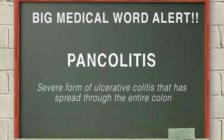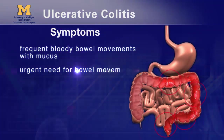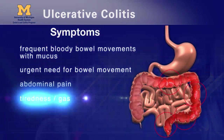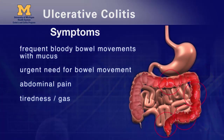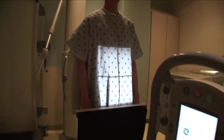The symptoms that usually have the most impact on patients with ulcerative colitis are frequent bloody bowel movements containing mucus, the urgent need to have a bowel movement, abdominal pain, tiredness, gas, and weight loss. The bloody bowel movements usually get people to go to a doctor right away and generally lead to a diagnosis more quickly in ulcerative colitis compared to Crohn's disease.